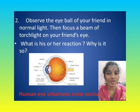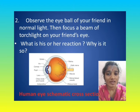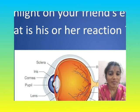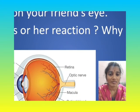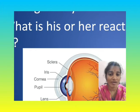Observe the eyeball of your friend in normal light. Then focus a beam of torch light on your friend's eye. What is his or her reaction? Why is it so? This is the schematic cross-sectional view of the Eye.